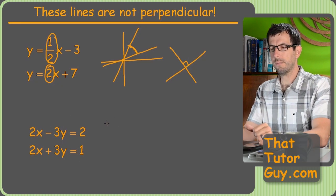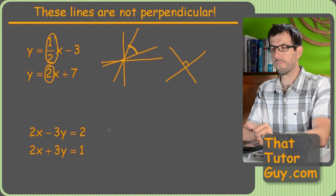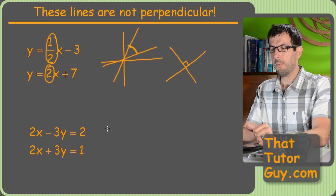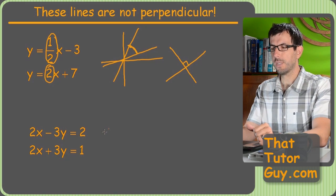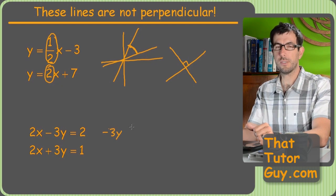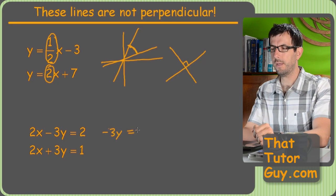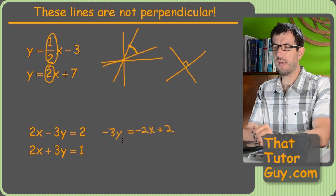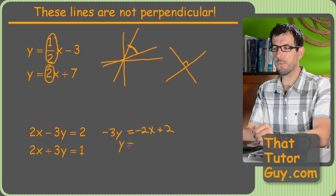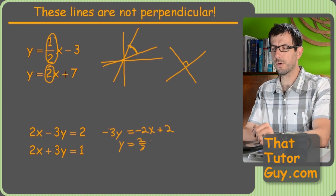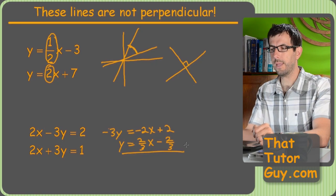Similar thing happens on this one. If we rearrange it, we've got to subtract two x from both sides, so we'll get negative three y. Because remember the slope, the standard form that these lines are in, totally meaningless. We've got to rearrange it to have y by itself. So negative two x plus two for the top one. So divide everything by negative three, and we'll get y equals two-thirds, because the negative two and negative three, the signs cancel, and we'll get two-thirds x minus two-thirds. So that's one line.